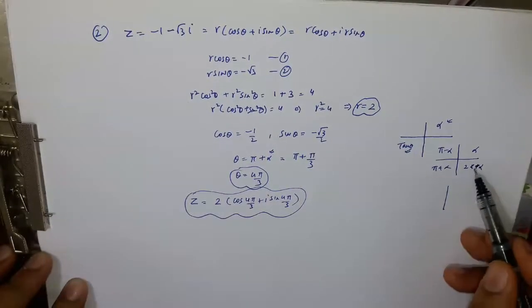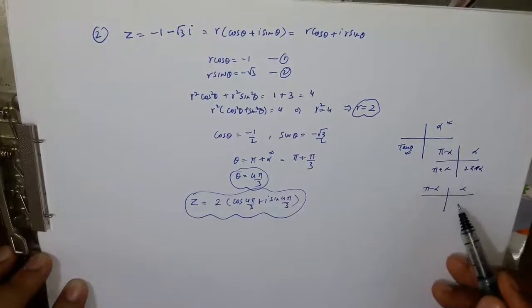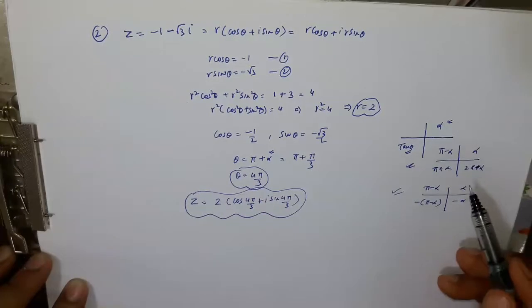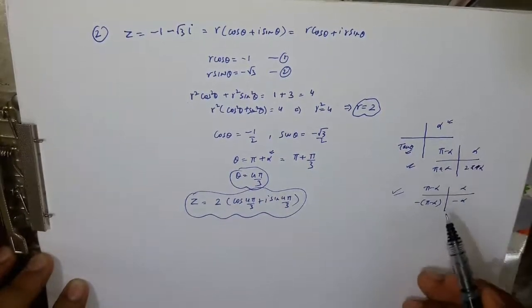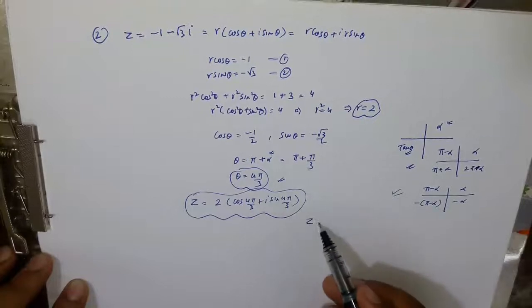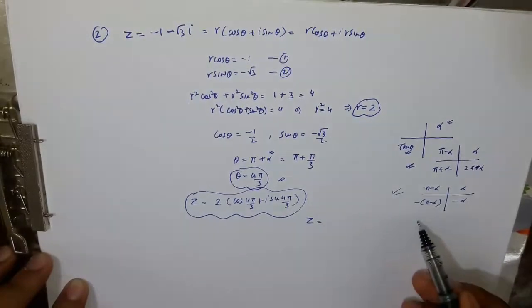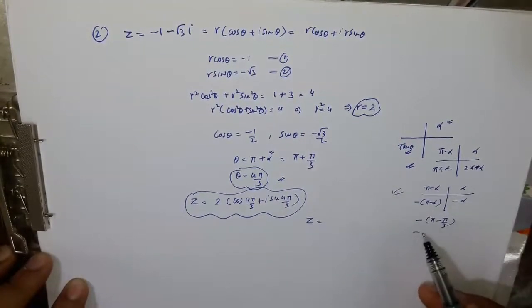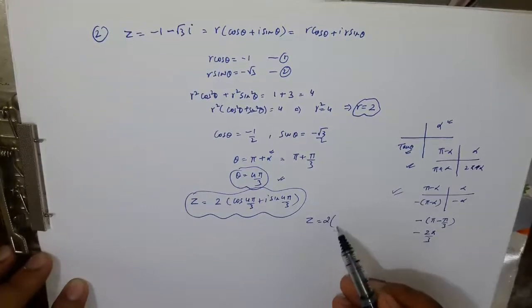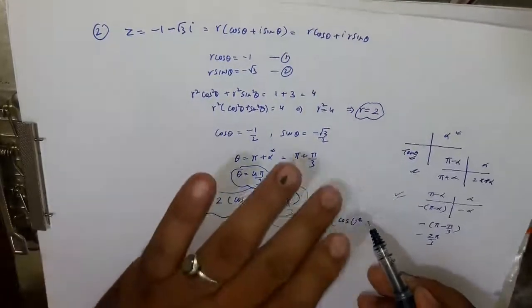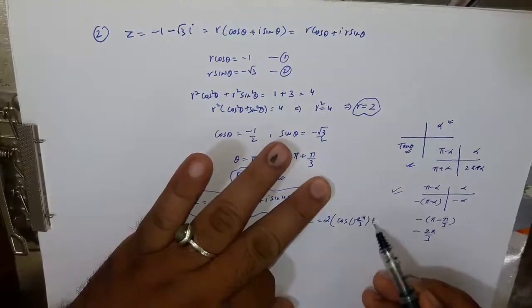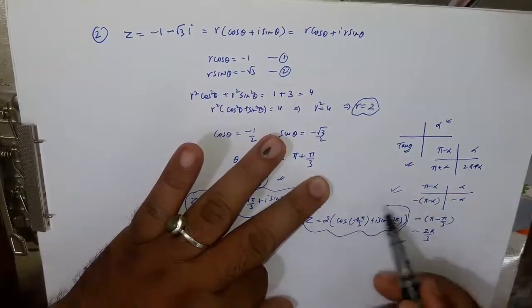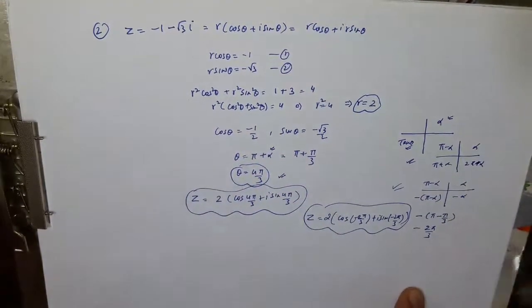In some books they write this alpha, pi minus alpha, this negative and this negative. So we can apply this and this because we know that trigonometry has the same value. If I write this 4 pi by 3, then I can write this minus pi minus pi by 3, because alpha is pi by 3, minus 2 pi by 3. So 2 cos minus 2 pi by 3 plus iota sin minus 2 pi by 3. Both answers are the same and both are acceptable. So you can go for this way or this way. Both are correct.